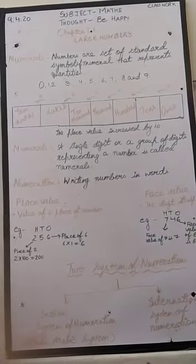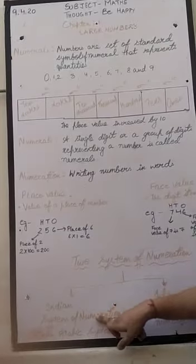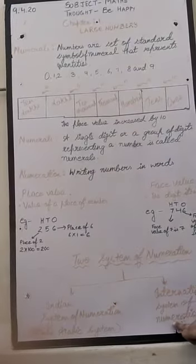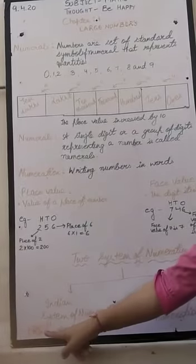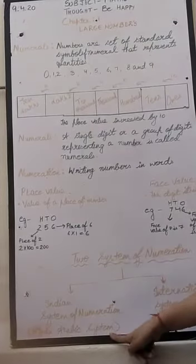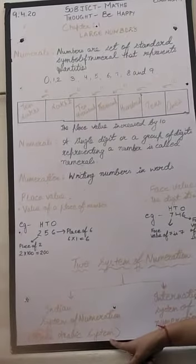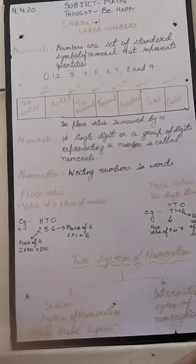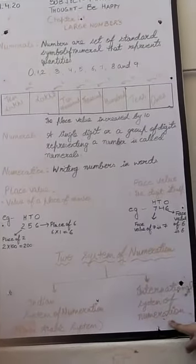Now let's learn about the 2 system of numeration. That is Indian system of numeration and international system of numeration. You have also learned that Indian system of numeration is also called as Hindu-Arabic system. In which you learn different periods like lakhs, ten lakhs, thousand, ten thousand, hundred, tens, ones. An international system of numeration is new for you.